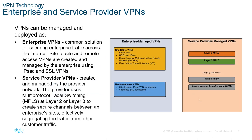There are a few different types of VPNs: enterprise-managed and service-provider-managed. Enterprise-managed includes IPSec, GRE, and other Cisco VPN forms, as well as remote access VPNs — client-based IPSec connections or clientless SSL connections — those are the main mobile VPN types. Service-provider-managed VPNs use layer 2 or layer 3 MPLS, or older technologies like frame relay or ATM.